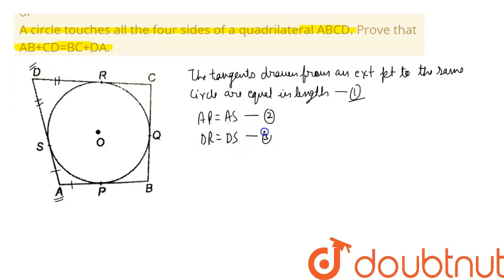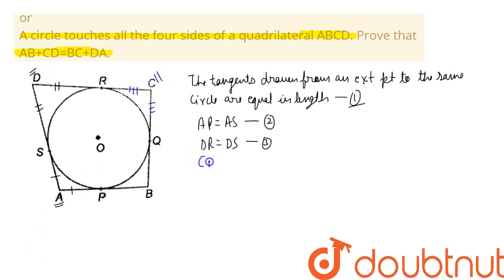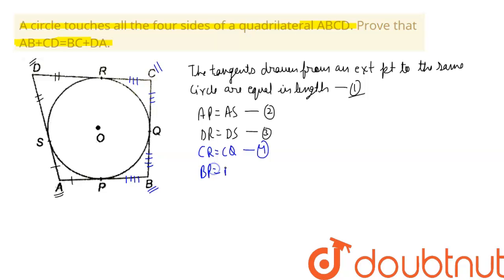Similarly, point C is the external point, and from it we draw two tangents CR and CQ. By the same logic, CR equals CQ — this is equation three. Finally, considering point B as the external point, the two tangents BP and BQ are of the same length, so BP equals BQ — this is equation four.